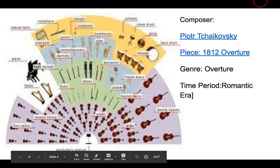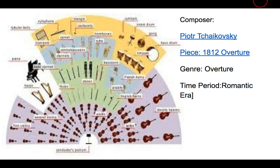In our woodwind section we have flutes, oboes, and piccolos — piccolos are smaller flutes. In our horn section we have French horns and English horns. In our brass section we now have tubas, trombones, and trumpets. In our woodwind section we have different kinds of clarinets and bassoons. In our percussion section we have more timpani, the addition of a bass drum, a gong, a snare drum, crash cymbals, a triangle, a xylophone, bells, and possibly chimes.